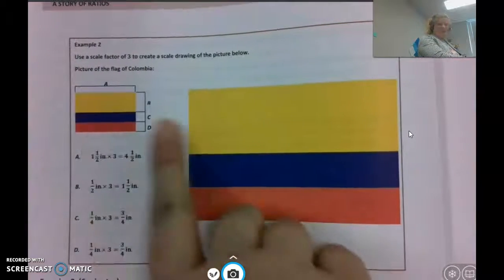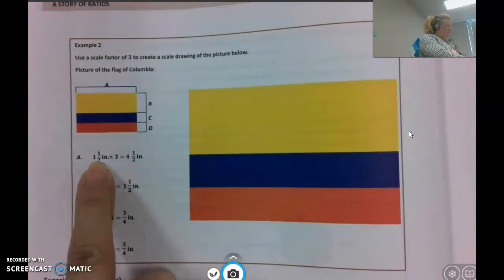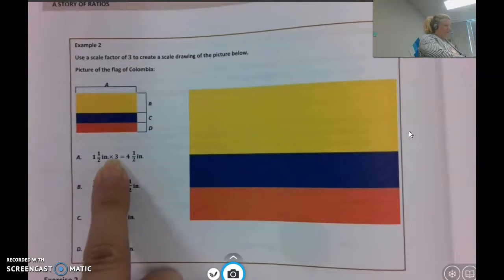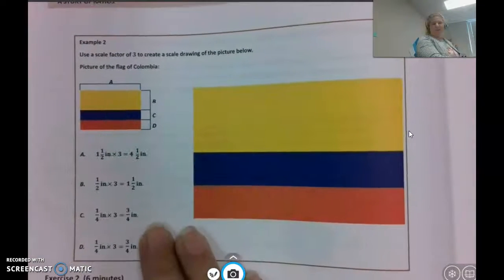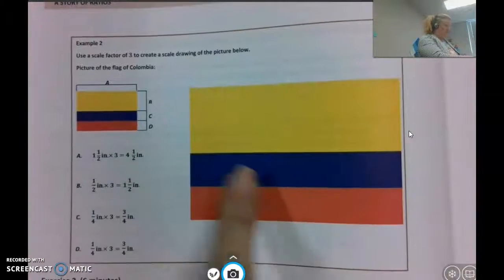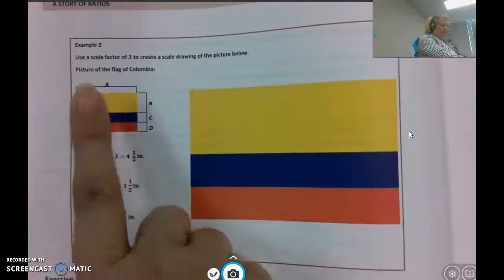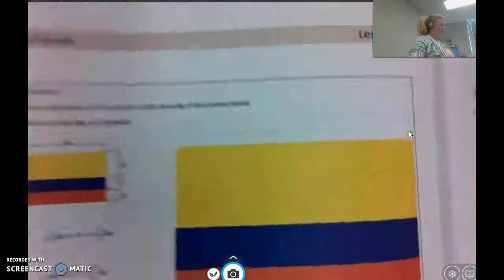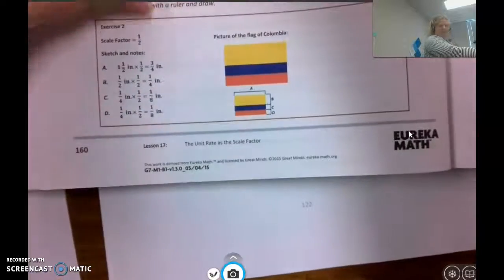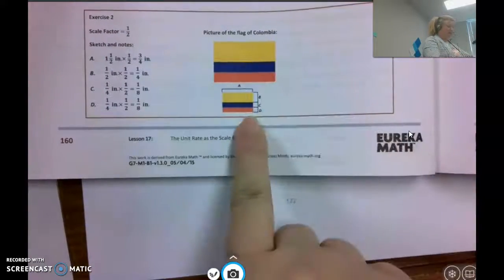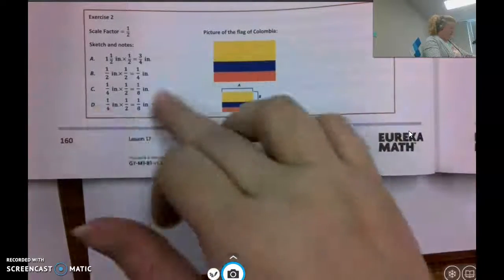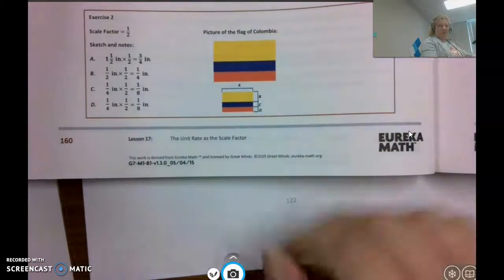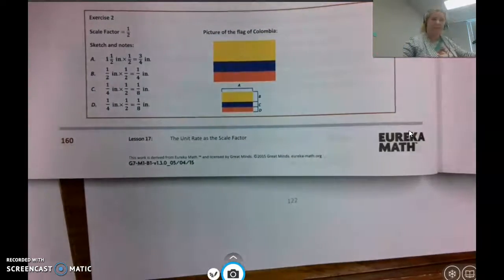It looks like here they've used this. If that was one and a half inches, then I would multiply by three to get four and a half inches for this length. And they've done that for each piece. But you can see this is three times as large as this because the scale factor is three. And for the other one, they have a scale factor of one half. So the new one is actually smaller than the original. And they have their measurements here as well.